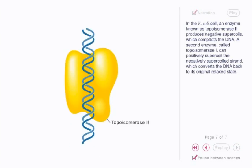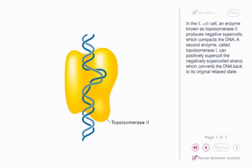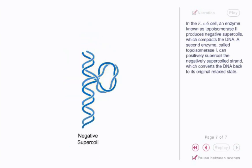This twisting produces a positive supercoil. In the E. coli cell, an enzyme known as topoisomerase 2 produces negative supercoils, which compacts the DNA.